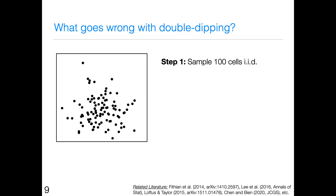In a bit more detail, what's the actual problem here? We're going to sample 100 cells IID from a normal 0-1 distribution in two dimensions. There's no clusters here — this is just a plain vanilla null hypothesis, nothing interesting. Now we're going to cluster the cells. Anytime you give me data, I can cluster it — it doesn't mean the clusters are going to be meaningful, but I can cluster it no problem.